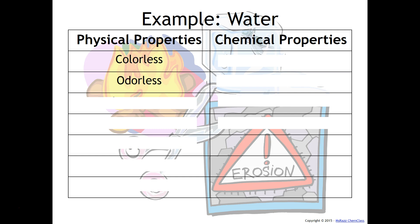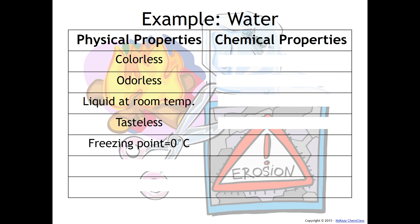Water is odorless — if you smell it, you don't change the chemical composition of water. It's a liquid at room temperature. Water is tasteless and has a freezing point of 0 degrees Celsius, a boiling point of 100 degrees Celsius, and it flows. All of these can be observed without changing the chemical identity or chemical composition of water.